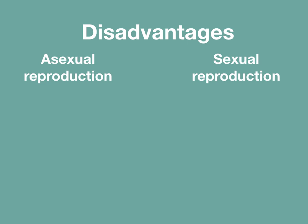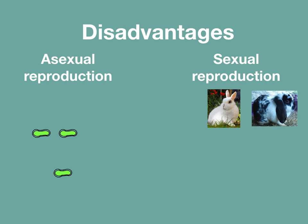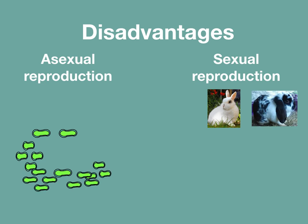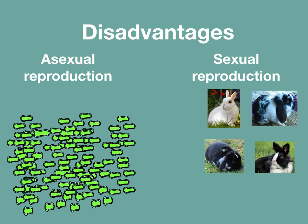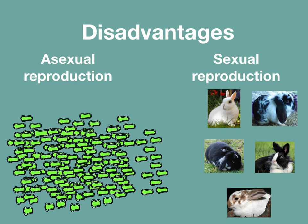However, because it does require two parents, it takes a lot longer to increase the population than with asexual reproduction. Recovering from a major environmental change could take a long time.